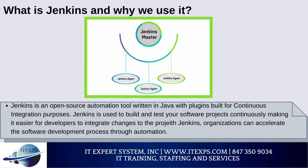Jenkins is an open source automation tool written in Java with plugins built for continuous integration purposes. Jenkins is used to build and test your software projects continuously, making it easier for developers to integrate changes to the project and for users to obtain a fresh build. It also allows you to continuously deliver your software by integrating with a large number of testing and deployment technologies.